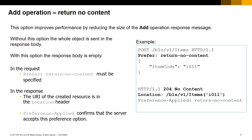An example is shown here. We have an HTTP POST operation that uses the return no content option. The preference applied confirms that the server accepts the option, and the location indicates the newly created item's entity has the key I011.